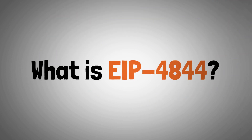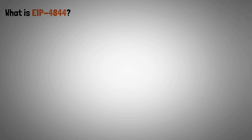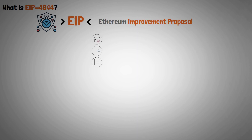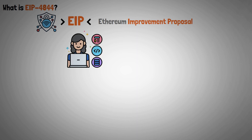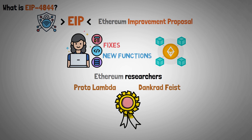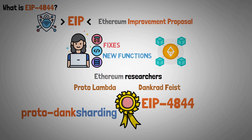Let's start with what is EIP 4844. The protocol known as EIP, or Ethereum Improvement Proposal, enables programmers to suggest new functions and fixes for the Ethereum chain. Proto-Lambet and Dankred Feist, two Ethereum researchers, are honored by the name Proto-Danksharding, also known as EIP 4844.